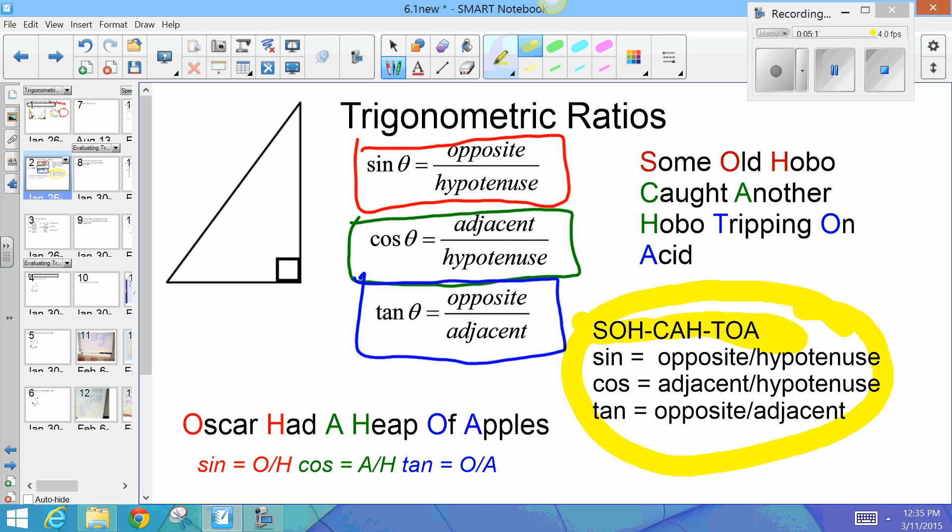So, the one that I use is Oscar Had a Heap of Apples. Okay. And the first letter of each word gives you the sides of the triangle in the order of first sine, then cosine, then tangent. So, Oscar Had is opposite over hypotenuse. That's for sine. Cosine is a Heap. That's adjacent over hypotenuse. And tangent is of Apples. That's opposite over adjacent.